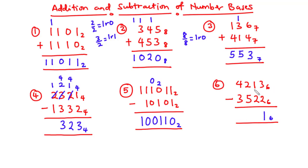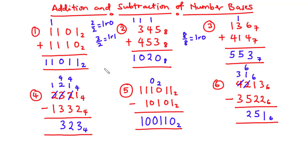For example 6, 3 minus 2 is 1. Then 1 minus 2 is not possible — we borrow from the next digit, and because we are working in base 6, what we borrow is 6. So 6 plus 1 is 7, and 7 minus 2 is 5. Next digit: we borrow from the following value which becomes 3, giving us 6 plus 1 is 7, and 7 minus 5 is 2. Then 3 minus 3 is 0. The answer is 251 base 6.